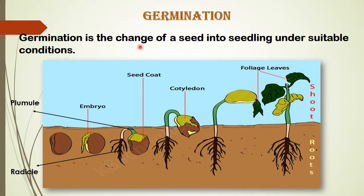Germination is the change of a seed into a seedling under suitable conditions. A seedling is the growth of a new young plant from the seed. In order to germinate, a seed needs warm water and air. A tiny hole called the micropyle is present in the seed which allows it to absorb water. The water absorbed dissolves the food in the cotyledons and makes it available to the embryo. This food is used for the release of energy in the presence of air.